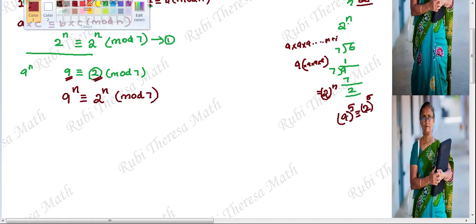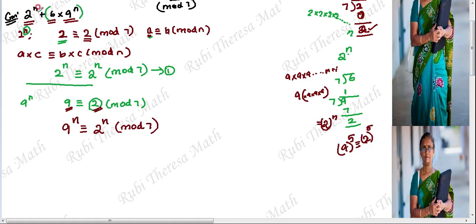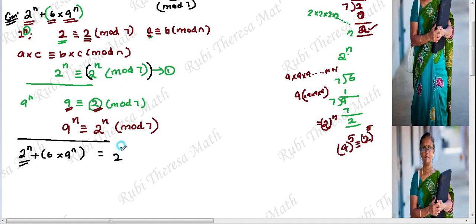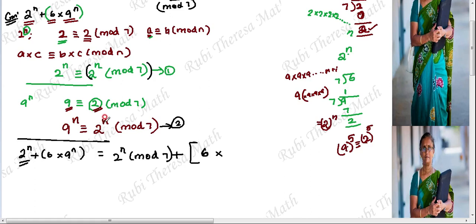So, if we consider the question: 2 power n plus 6 into 9 power n. From equation 1, 2 power n is congruent to 2 power n mod 7. So instead of 2 power n, I am going to write 2 power n mod 7. Plus 6 into 9 power n — from the second equation, 9 power n is congruent to 2 power n mod 7. So instead of 9 power n, I am going to write 2 power n mod 7.